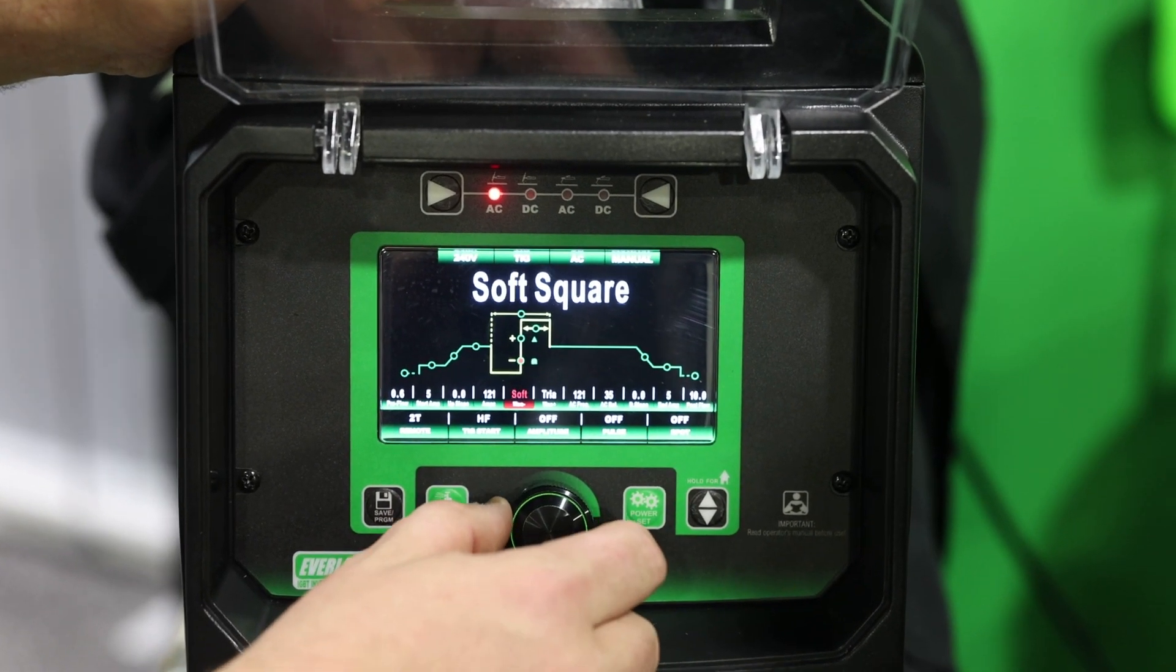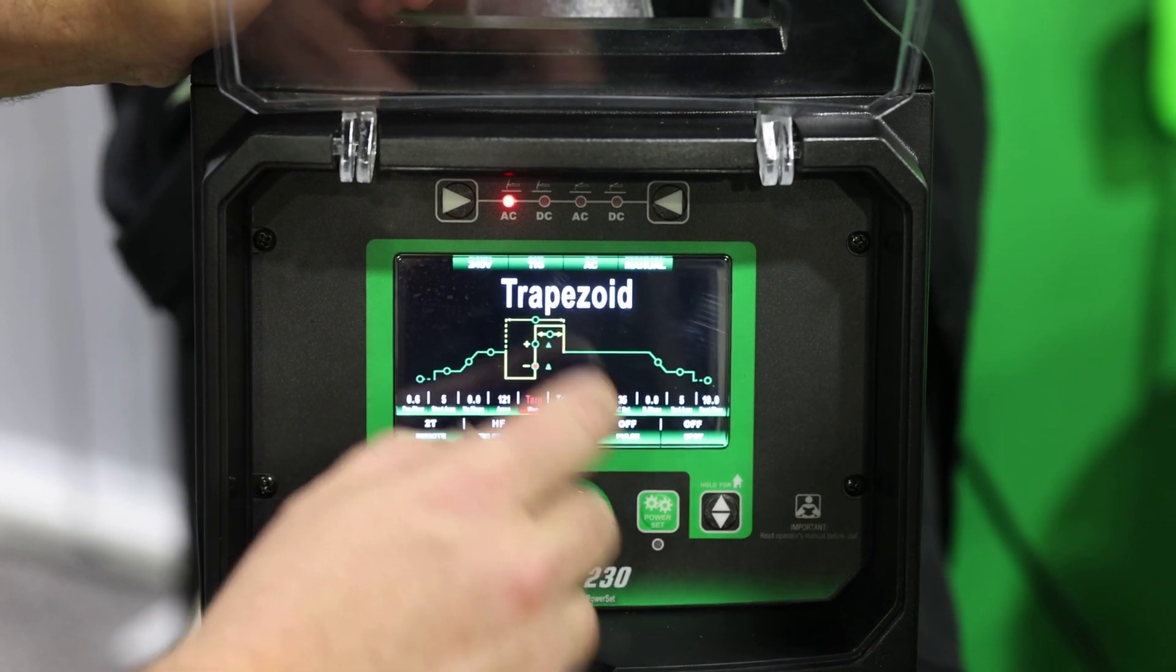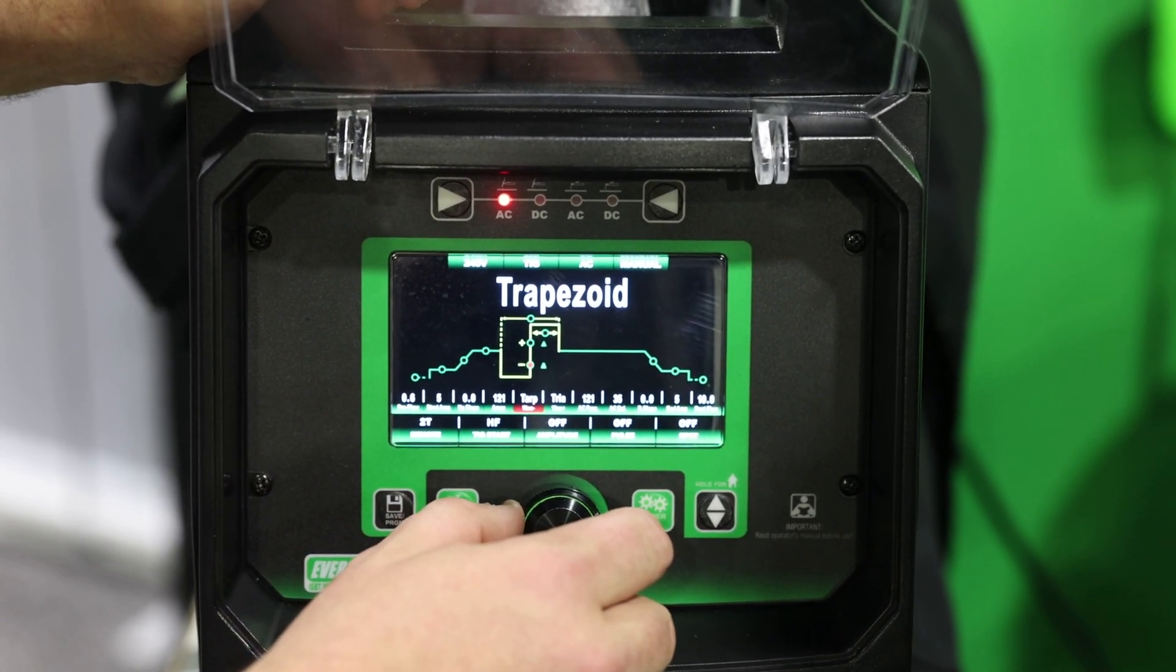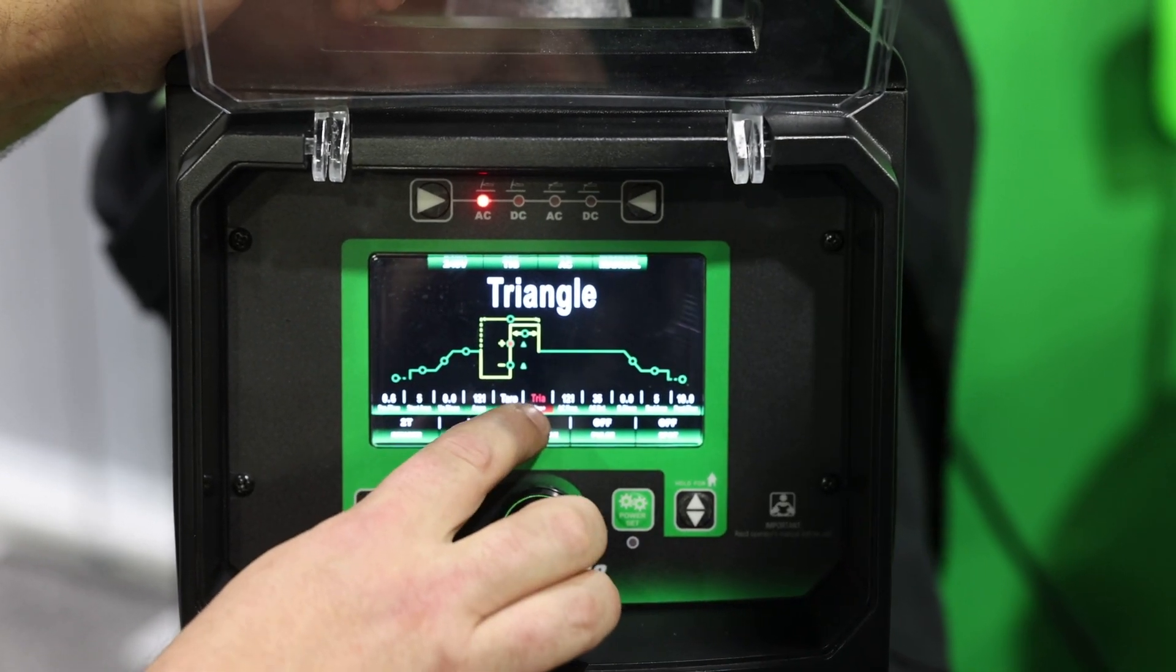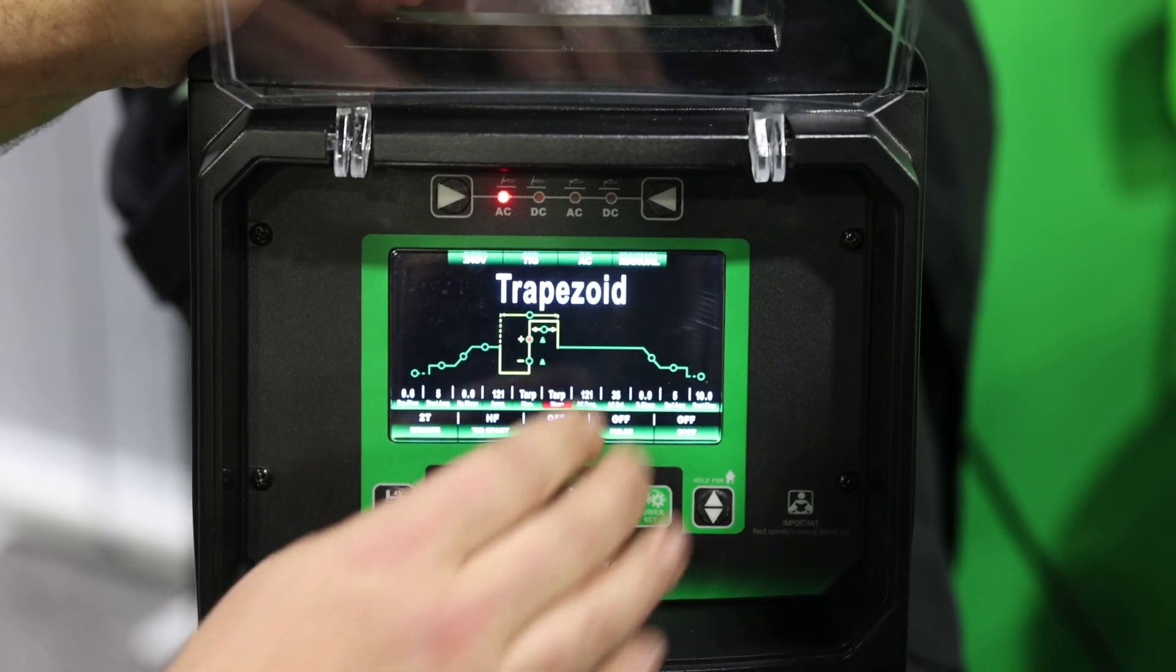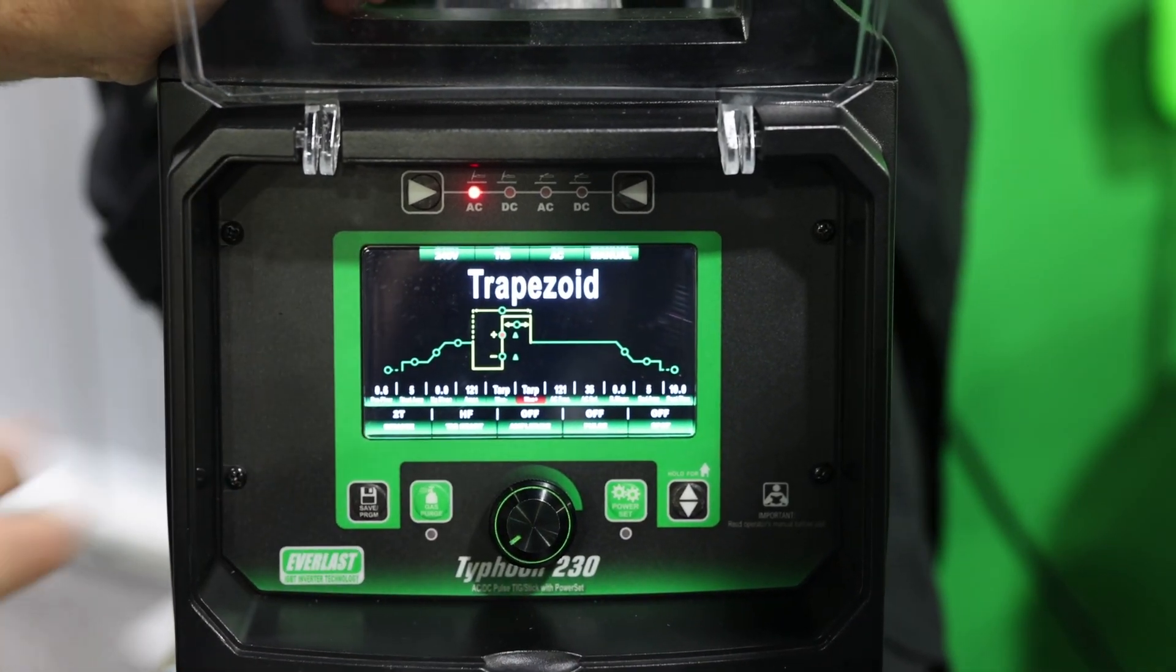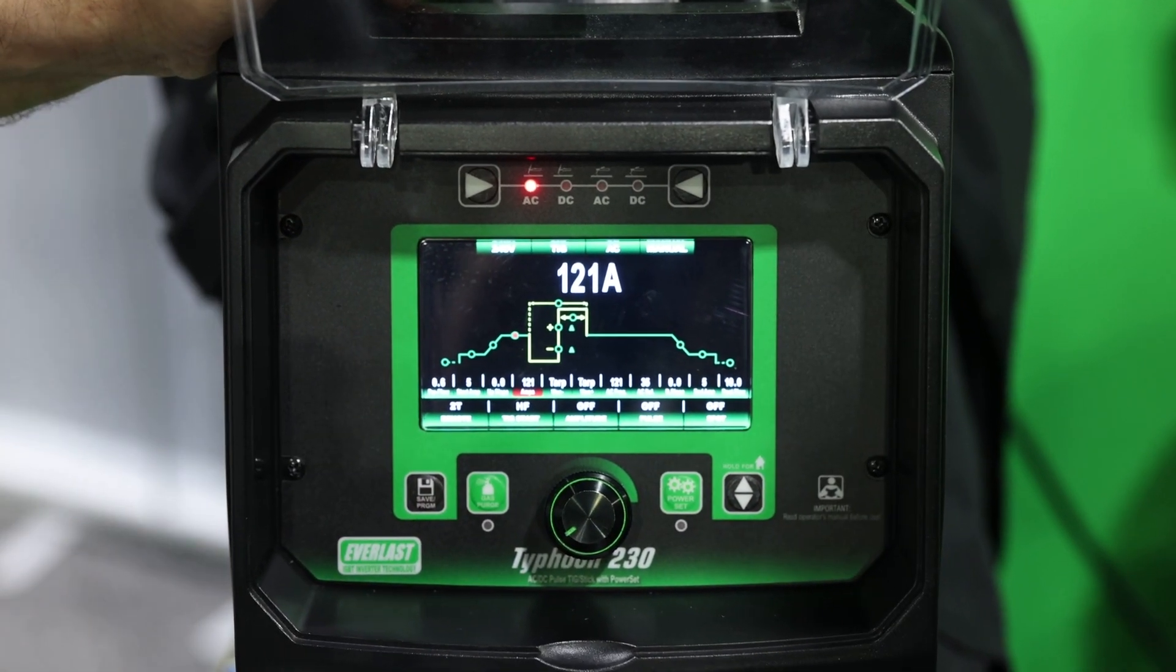So we need to go back to it, select it, roll through. We're going to go to our trapezoid waveform to start. This is on our electrode negative and our electrode positive side. So now we are running trapezoid waveform on both EN and EP. Let's set up on the table, run a couple beads, and we'll see what she does.